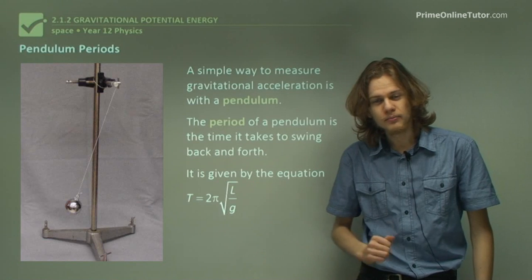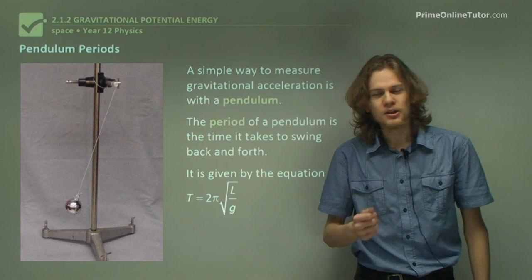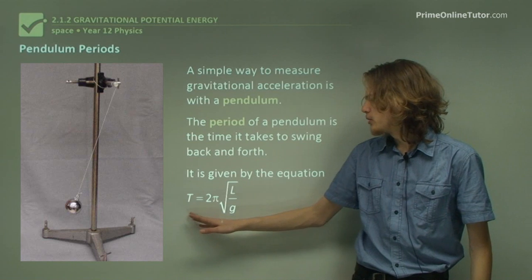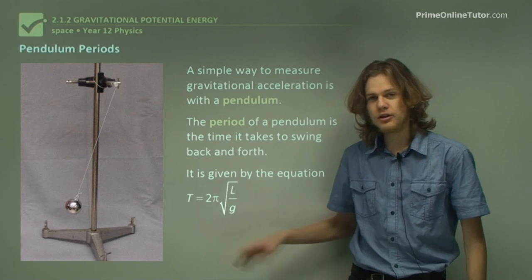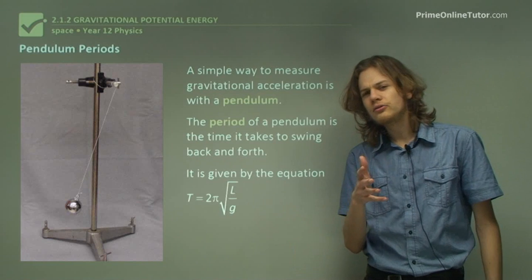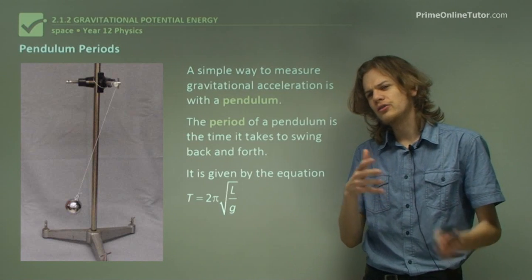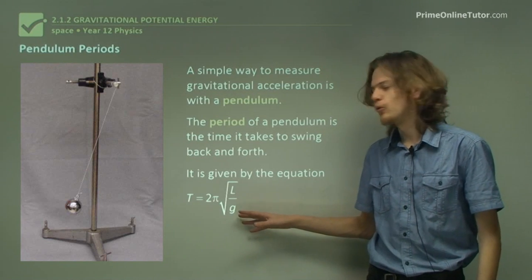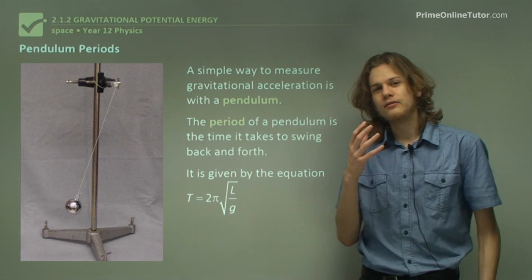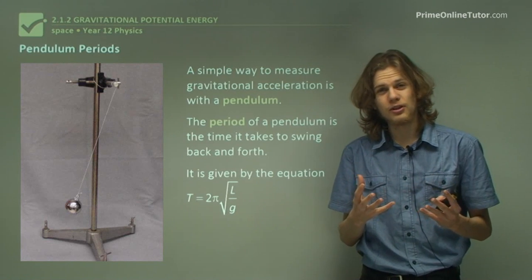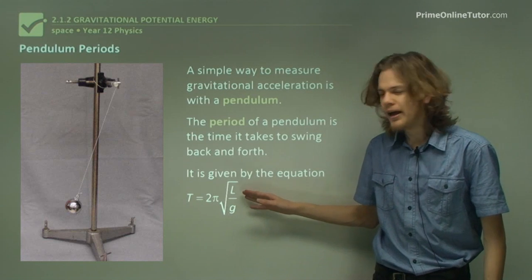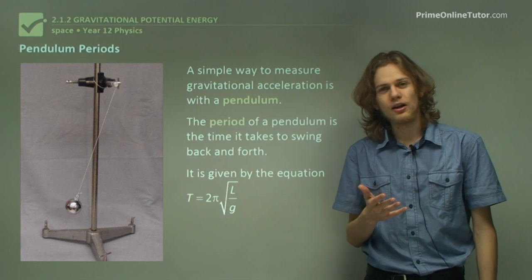The length of the period in seconds is given by this equation here. The period is equal to 2 pi times the square root of L over g. Now L is the length of the string in the pendulum, and g is of course the gravitational acceleration. So that's how we can figure out the gravitational acceleration with this equation.